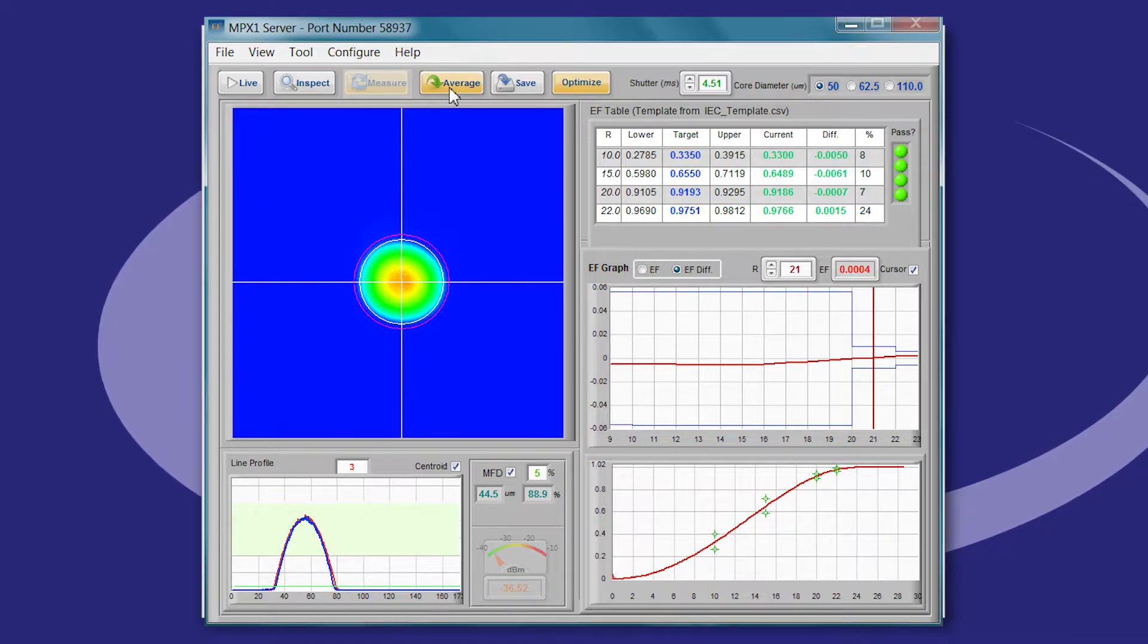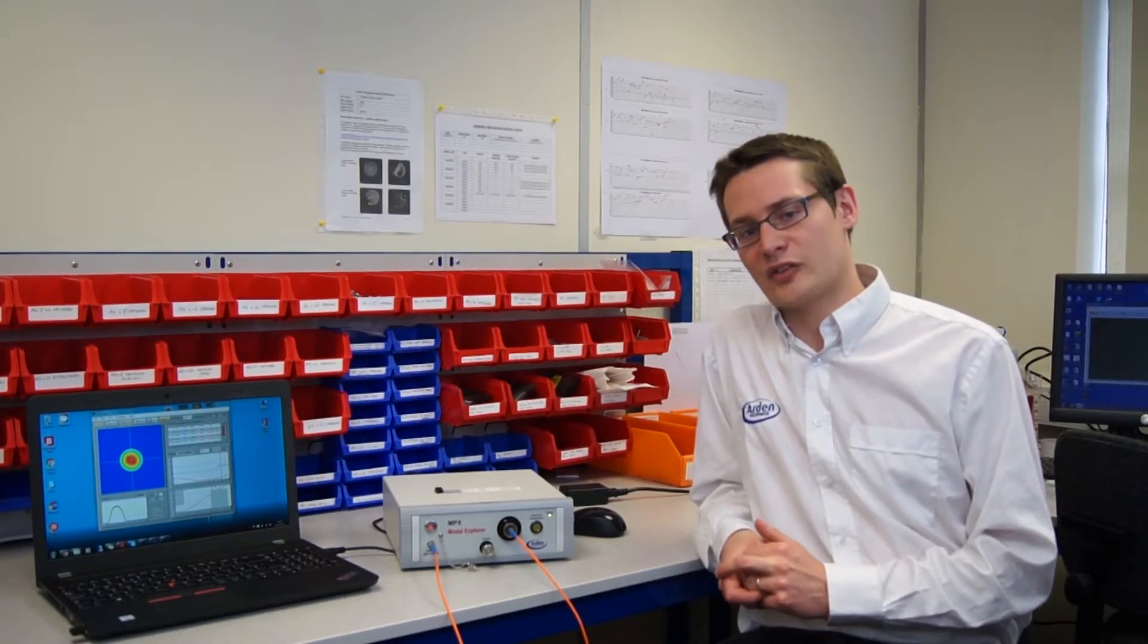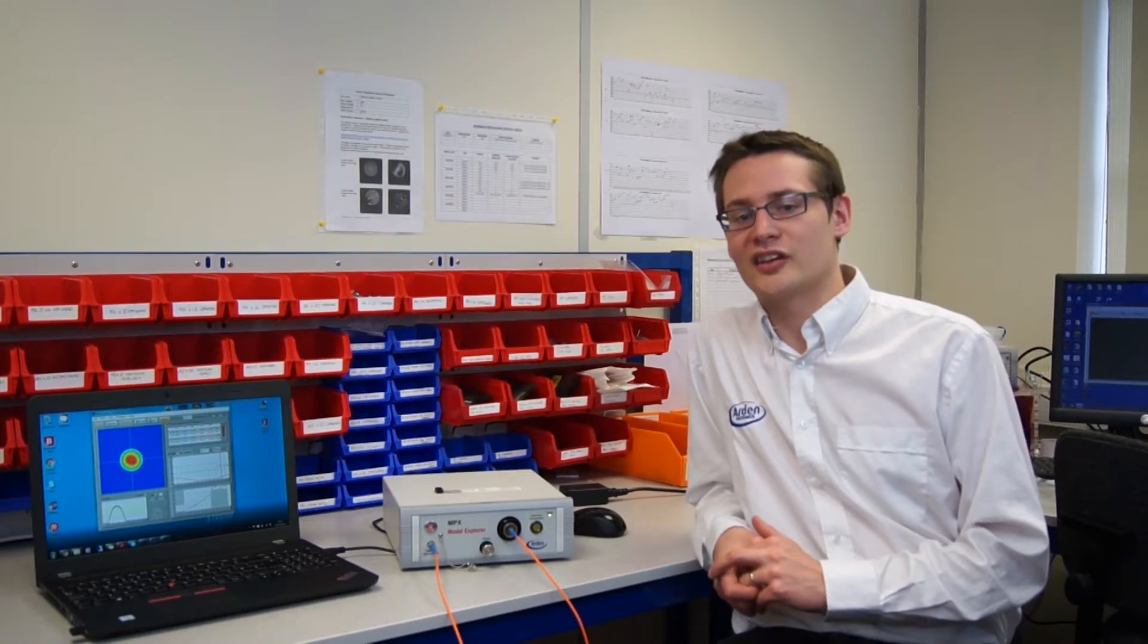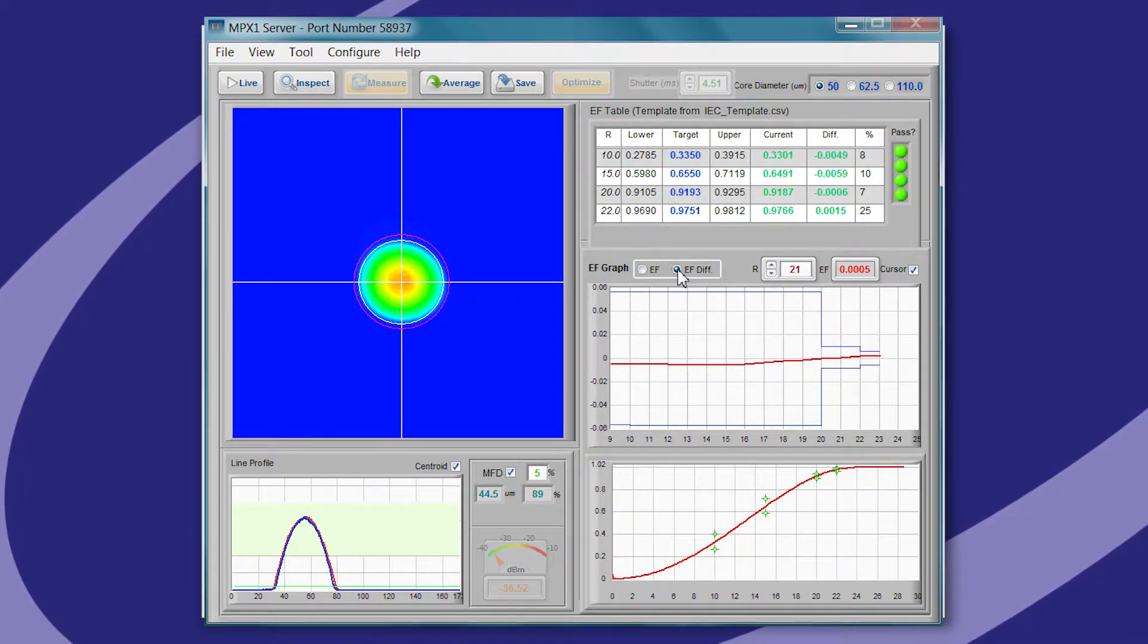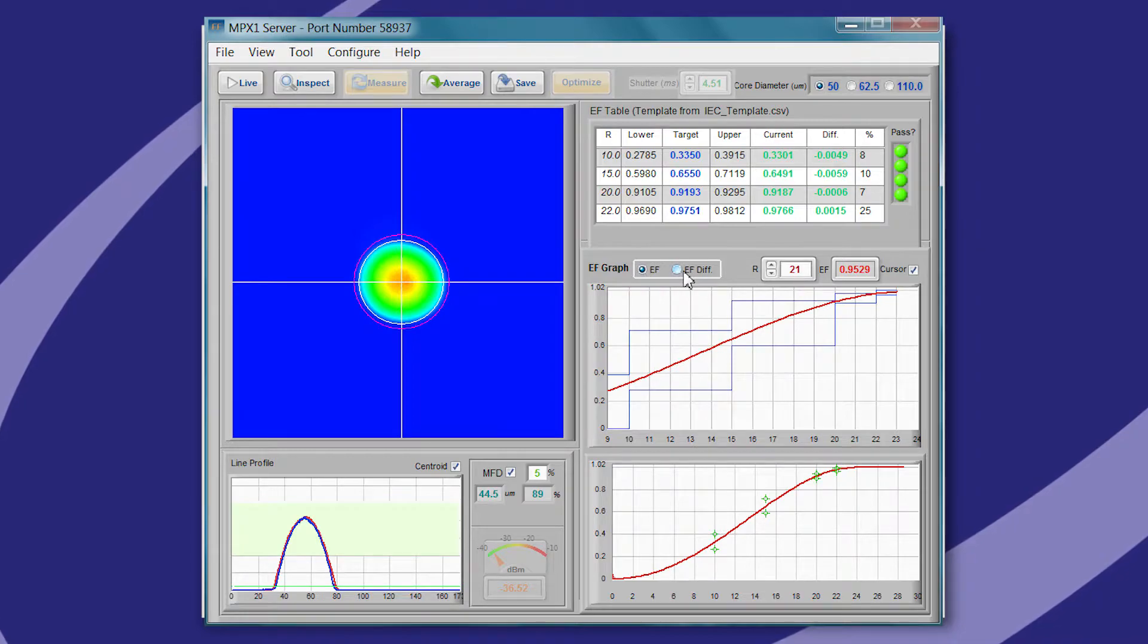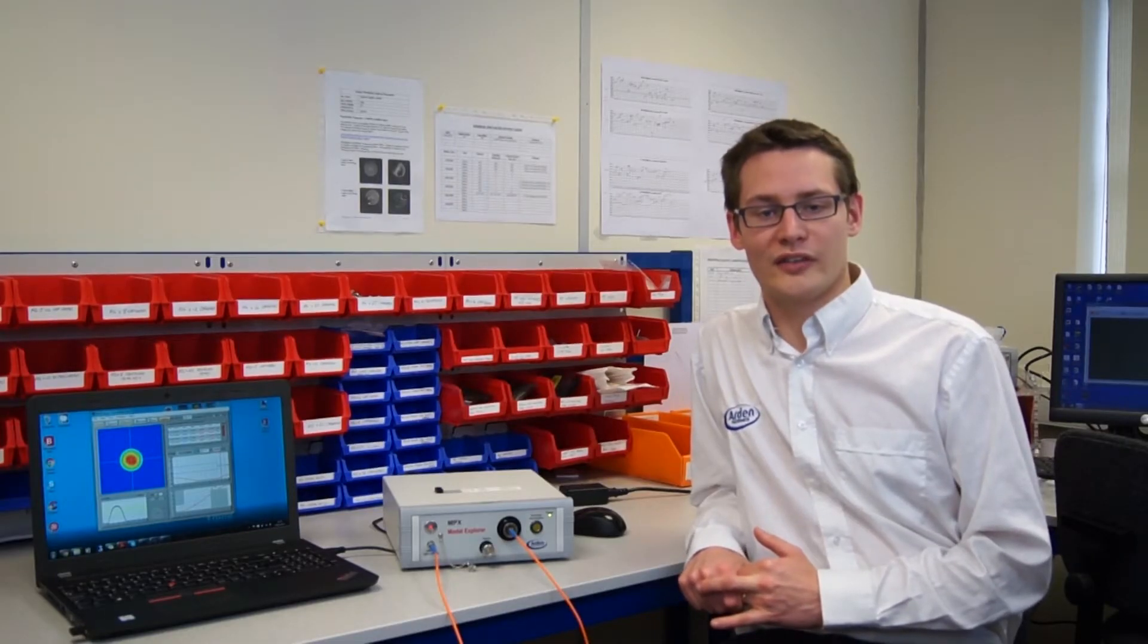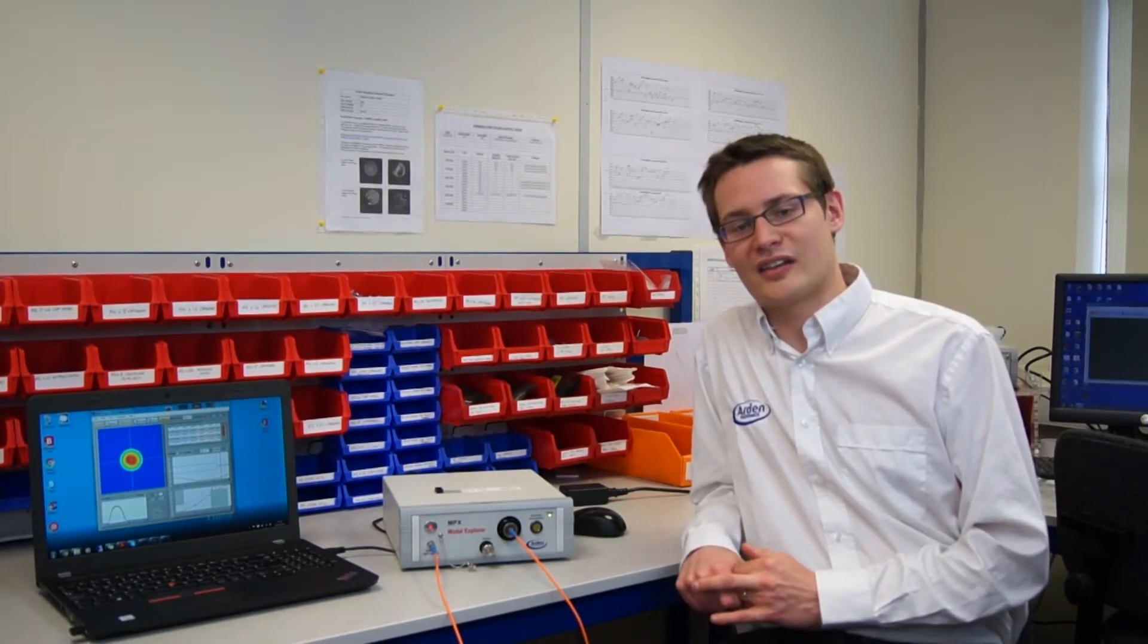Probably the biggest change is the addition of a new API functionality. This is a way for you to control and access data from the MPX programmatically. It enables automated testing and allows the incorporation of the MPX into integrated test routines. An additional license is required to use the API functionality. The API allows for the front panel functions of the MPX to be operated remotely. It comes with full documentation and sample code.